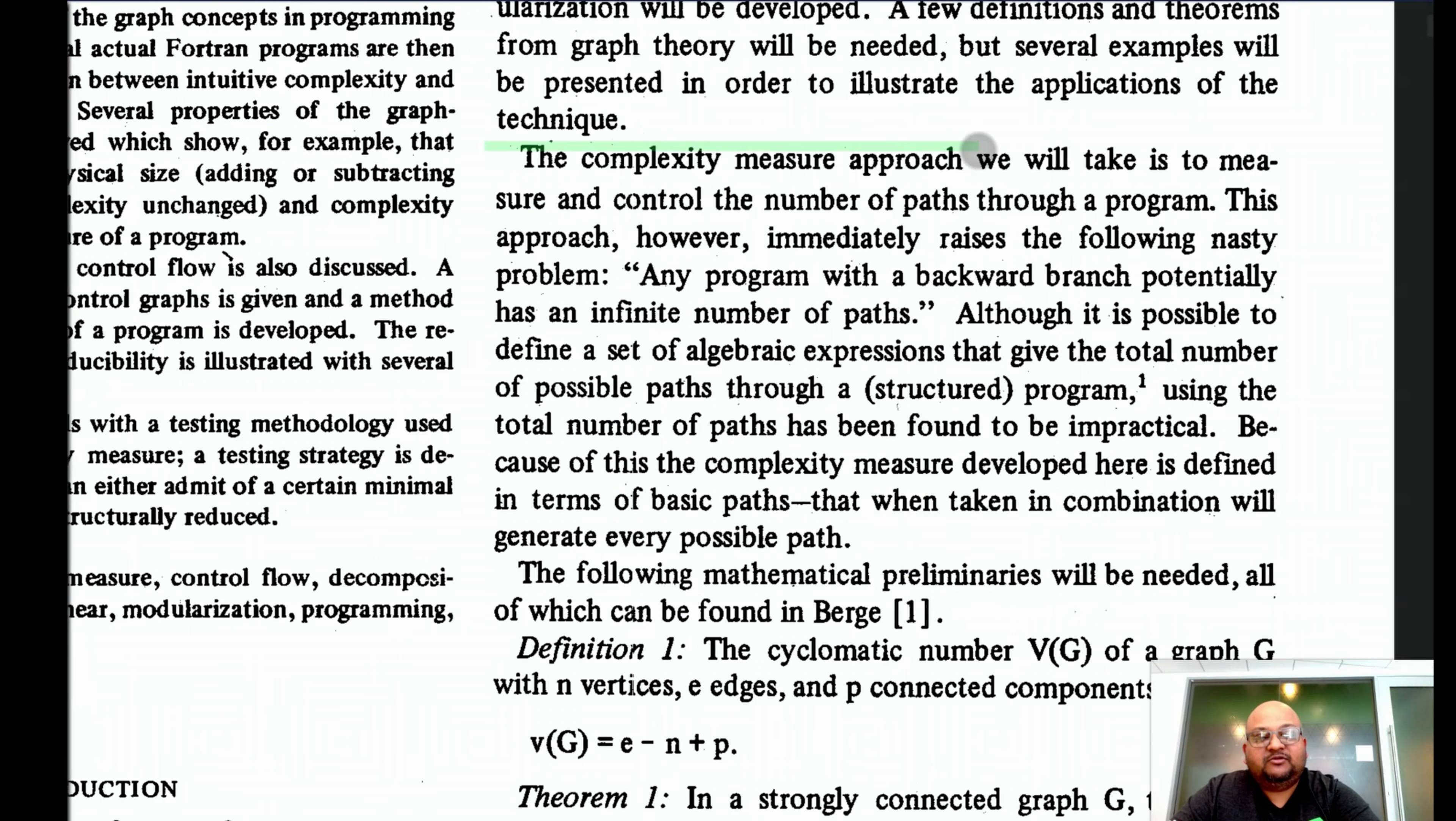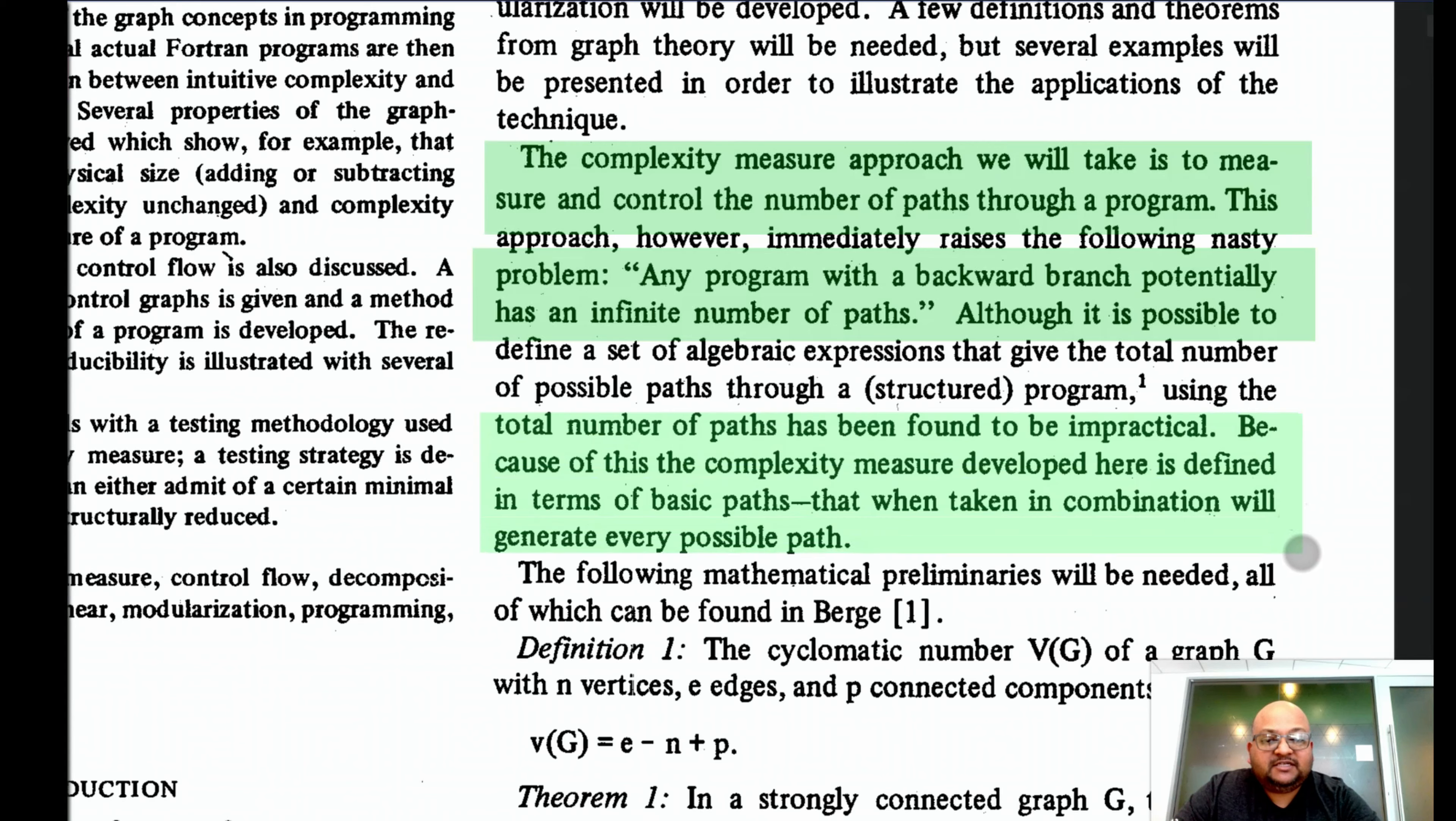So the next idea would be to propose a complexity measure which somehow counts the number of control paths through a program. The first hitch with this proposal is that any program with a loop has an infinite number of paths. And to get around that problem, we want to base our measure not on the total number of paths, but what the author refers to here as basic paths.